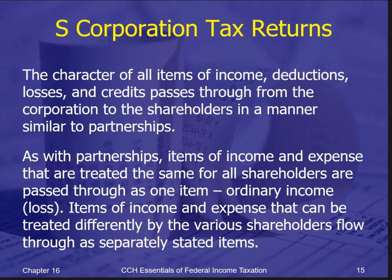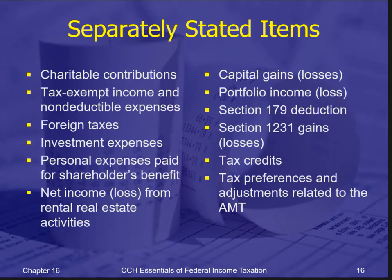Everything passes through to the shareholders, just like items pass through to partners in a partnership. You have items that are ordinary income and those that are treated differently as separately stated items. The list is very similar — almost the same as for a partnership. These are your separately stated items, and everything else is ordinary income reported as such.